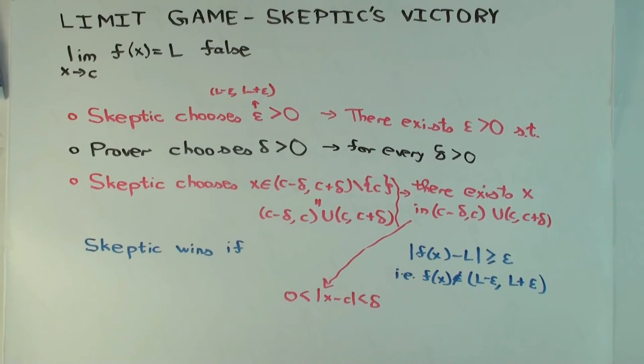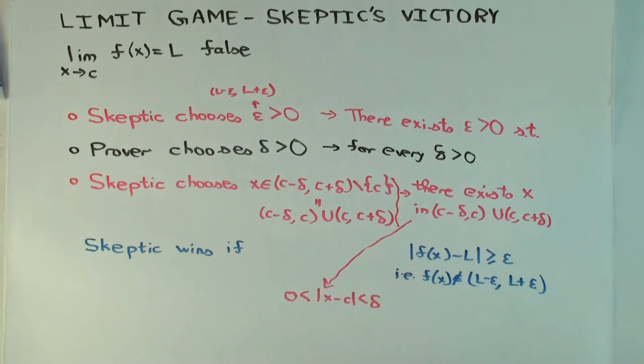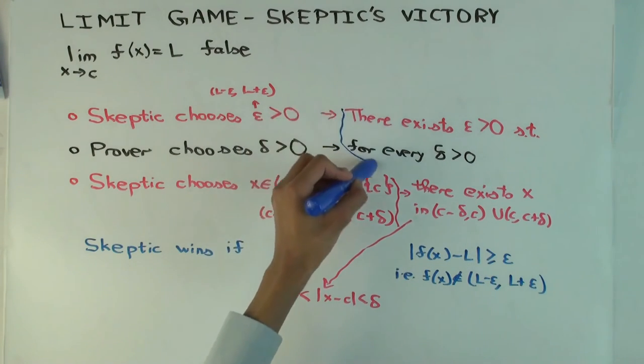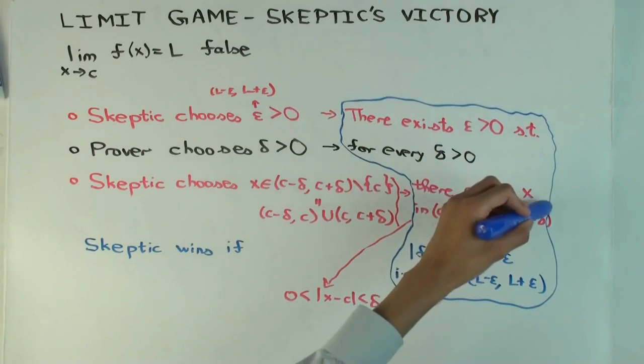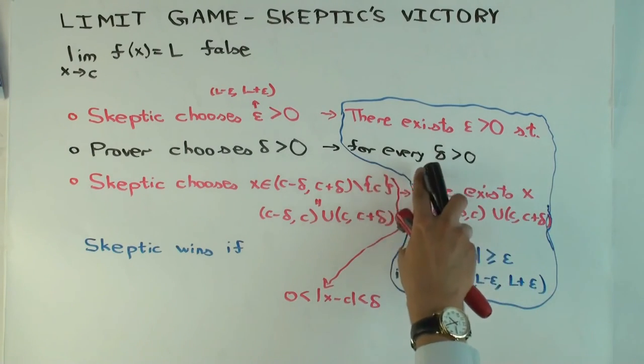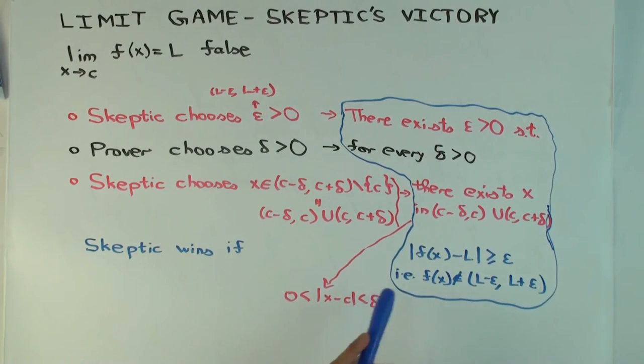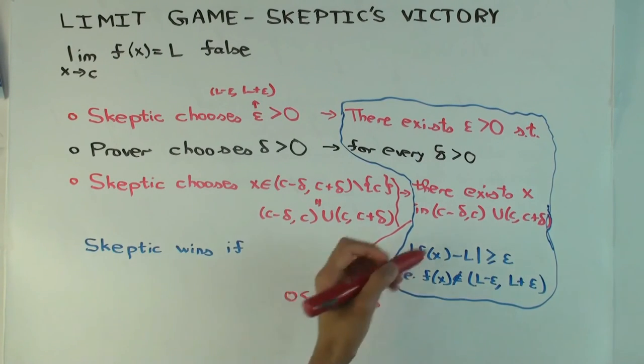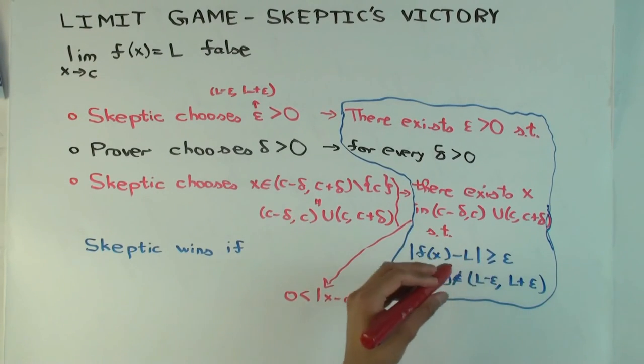We have this thing. So the definition would read like that. So there exists epsilon greater than zero, such that for every delta greater than zero, there exists x in here, which you could also write like this, such that absolute value of f(x) minus L greater than or equal to epsilon.